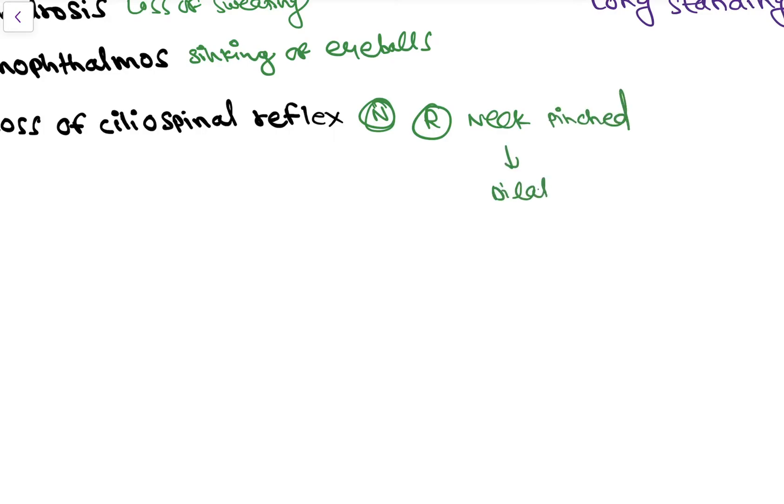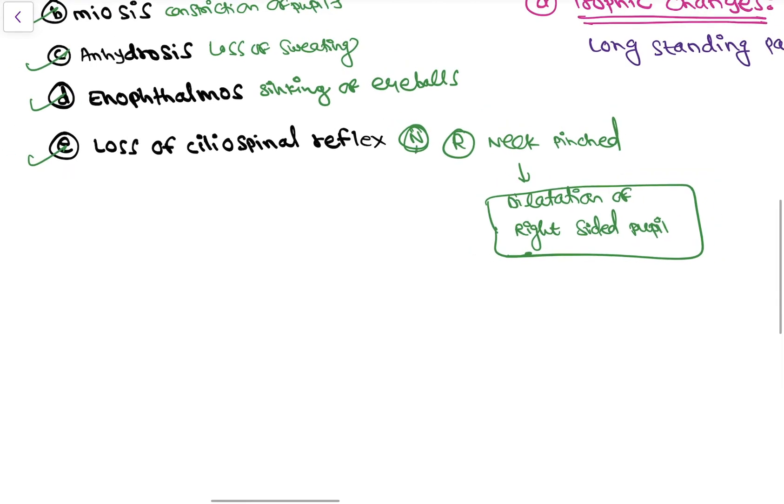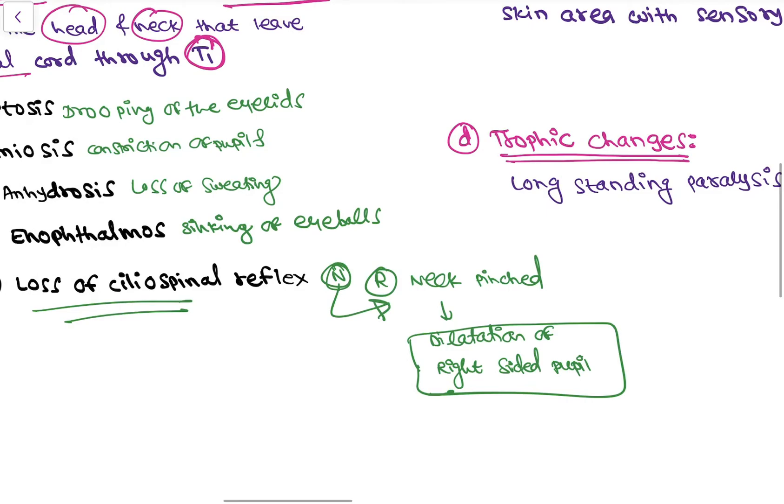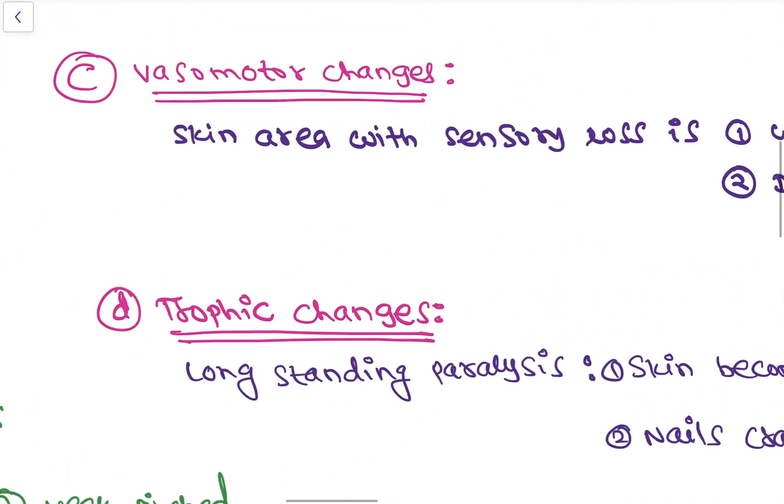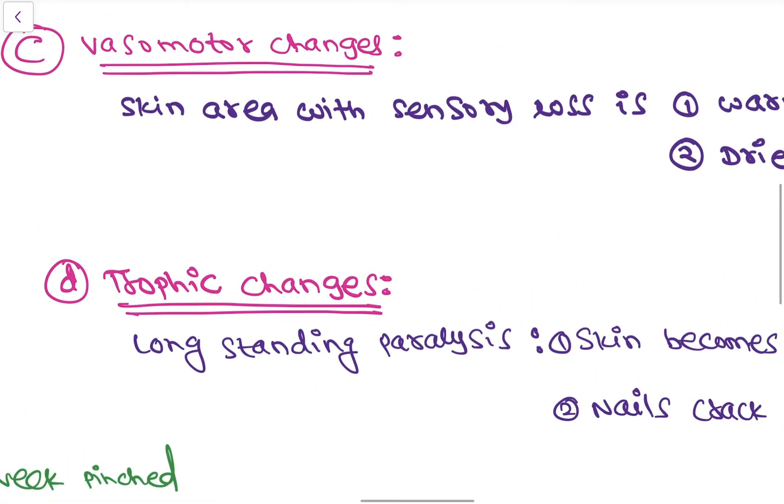This is the normal ciliospinal reflex. This is absent in Horner's syndrome. Then the next change is vasomotor change. So the skin area with sensory loss is warmer because there is arteriolar dilatation.